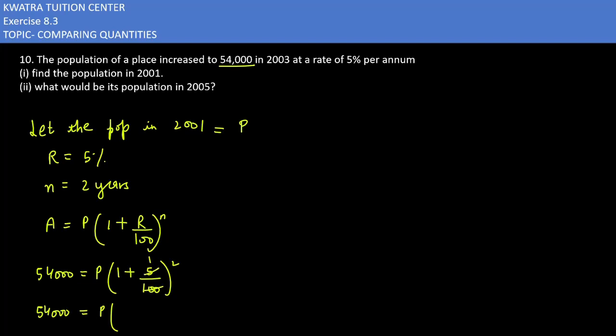1 plus 5 over 100 - 5 and 100 can be reduced which is 1 by 20, so it is 21 over 20 squared. The square means you have to write it twice. Whichever number is there, you have to make it twice. Now you can find the value.